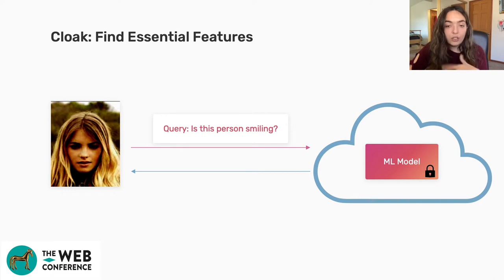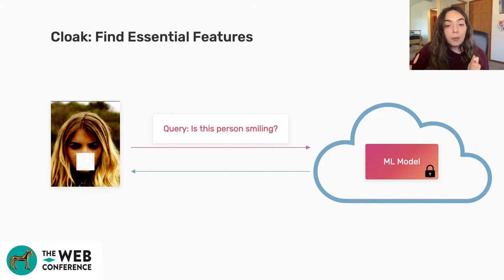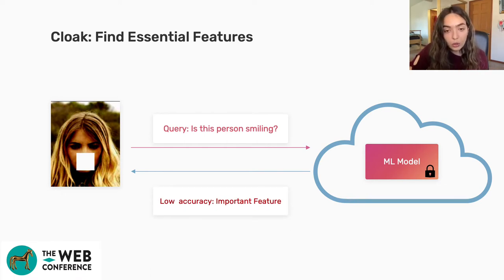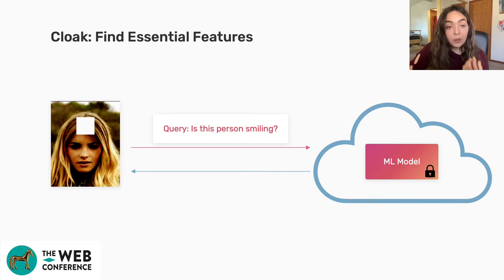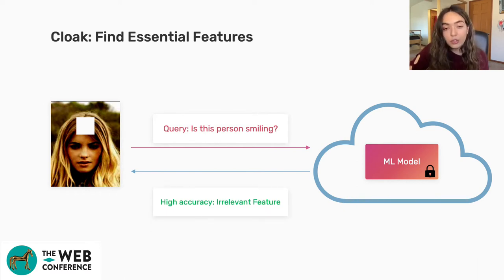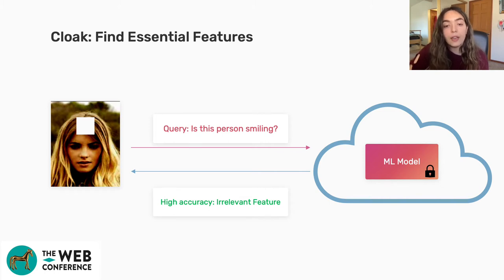Let's see how Cloak finds the features essential for a deployed machine learning model to make a certain decision. If we apply a small patch on a person's mouth, suppressing those pixels, and ask if this person is smiling, the model gives a low-accuracy response — those pixels were important features. If instead we suppress pixels on the person's forehead, we get an accurate response, meaning those features were irrelevant. Cloak builds on this intuition: suppressing important features loses accuracy, while suppressing less important ones does not.